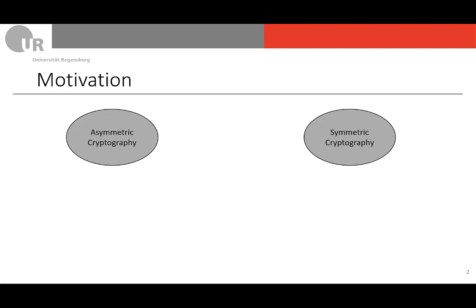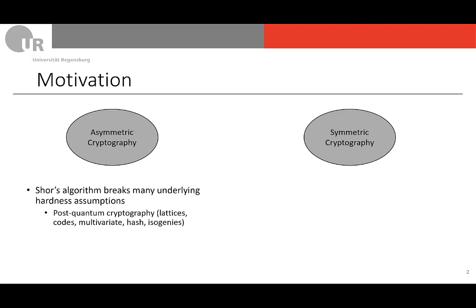Let me start with a very quick motivation of this work. In cryptography, we have two categories: asymmetric cryptography and symmetric cryptography. For asymmetric cryptography, we know that Shor's algorithm breaks many of the underlying hardness assumptions, like factoring integers as well as solving discrete logarithms, which is the reason for this conference to develop post-quantum cryptography — primitives based on lattices, codes, multivariate equations, hash functions, or isogenies.